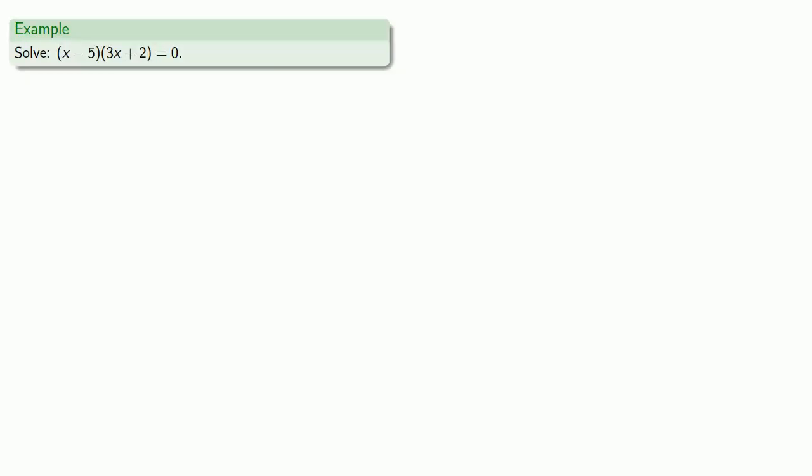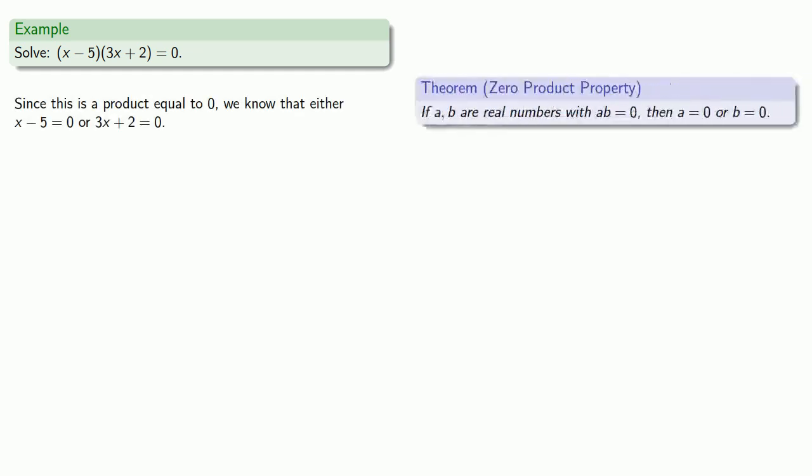This helps us with solving equations in the following way. Suppose I want to solve an equation like x minus 5 times 3x plus 2 equals zero. Since this is a product equal to zero, we know that either x minus 5 is zero or 3x plus 2 is equal to zero.